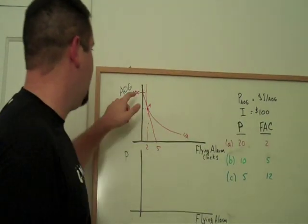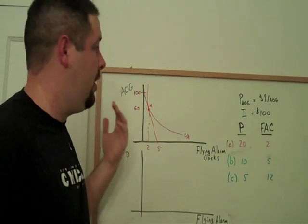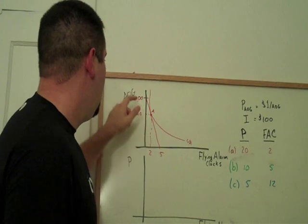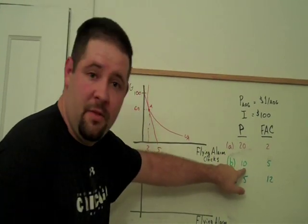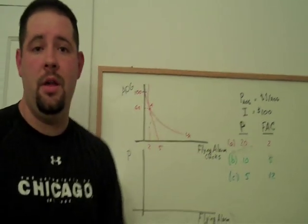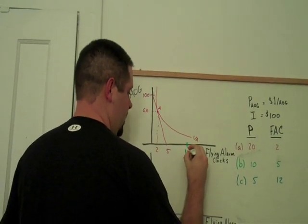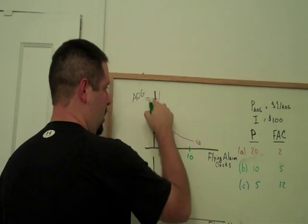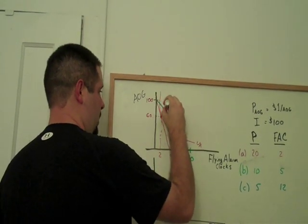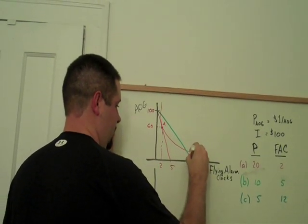Again, we can buy $100 of all of the goods because the price of all of the goods is always $1. If we spend all of our money on flying alarm clocks, well, now, at this lower price, we can buy 10. So we connect the dot from 10 to $100. So there is our new budget constraint.